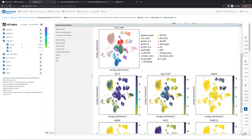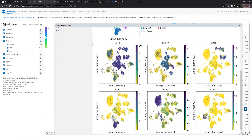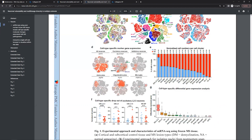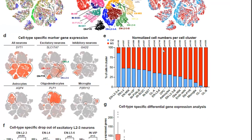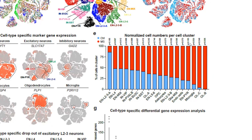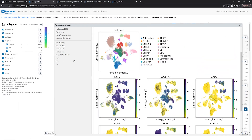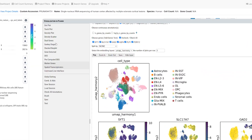These UMAP plots for cell type marker genes match with Figure 1D in the paper. We can also generate Figure 1E, which shows the percentage of MS and control cells in each cell type. In certain cell types, like microglia, a high percentage of cells are from MS. In Cell-by-Gene VIP, we can use a stacked bar plot.